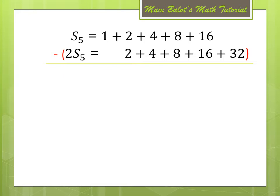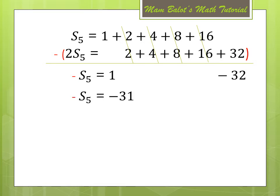So we have S sub 5 minus 2·S sub 5, which gives negative S sub 5. We bring down 1 since it has no like terms, then cancel out the middle terms, and for the last term we have 0 minus 32, giving negative 32. So 1 minus 32 becomes negative 31. Since we have a negative on S sub 5, we divide the whole equation by negative 1, so S sub 5 is equal to positive 31. We get a sum of the 5 terms, which is 31.